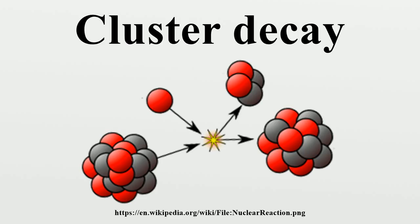Cluster decay, like alpha decay, is a quantum tunneling process. In order to be emitted, the cluster must penetrate a potential barrier. This is a different process than the more random nuclear disintegration that precedes light fragment emission in ternary fission, which may be a result of a nuclear reaction, but can also be a type of spontaneous radioactive decay in certain nuclides, demonstrating that input energy is not necessarily needed for fission, which remains a fundamentally different process mechanistically.